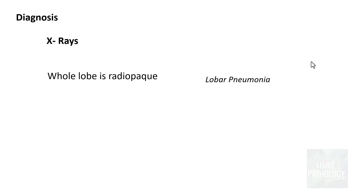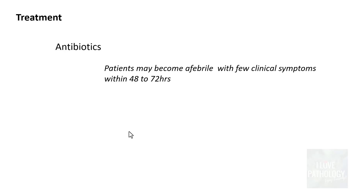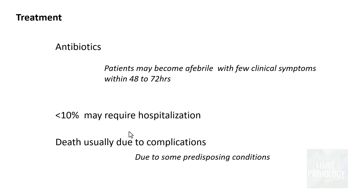For diagnosis, X-rays can indicate lobar involvement — where the whole lobe is radio-opaque — or lobular involvement with focal opacities in bronchopneumonia. Culture is the gold standard; you must identify the organism and determine antibiotic sensitivity for effective treatment. Patients may become afebrile with very few clinical symptoms within 48 to 72 hours if the organism is responding to the antibiotic. Less than 10% require hospitalization, and deaths are usually due to complications in patients with predisposing conditions.